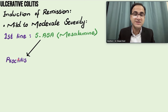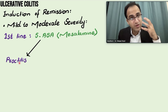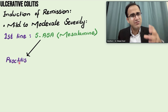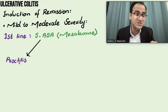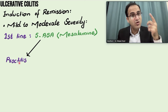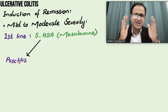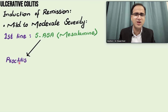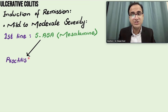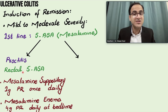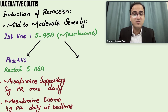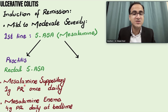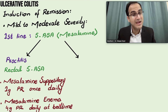If the patient is having proctitis — inflammation of the rectum — you can start rectal mesalamine. On digital rectal exam, the finger is often full of blood because the rectum is almost always involved in ulcerative colitis. Rectal mesalamine comes as suppositories: 1 gram per rectum once daily, or as enema: 4 grams per rectum daily at bedtime.